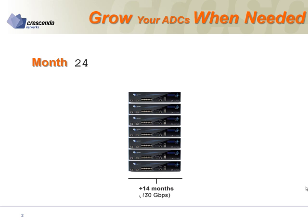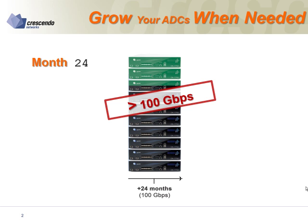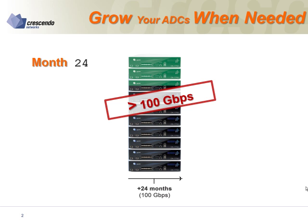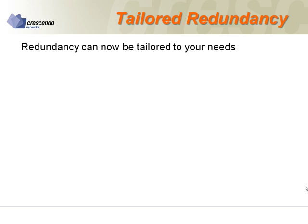You can flexibly grow your system to practically any size. In fact, you can even expand to huge systems that can process traffic of over a hundred gigabits per second. Redundancy is also significantly improved — you can now tailor your system's redundancy based on your website's needs.